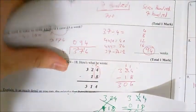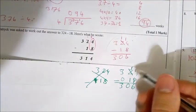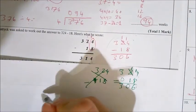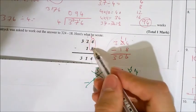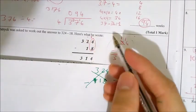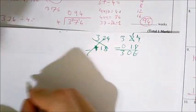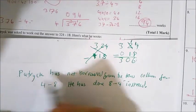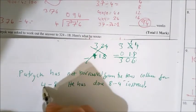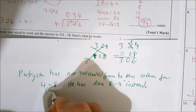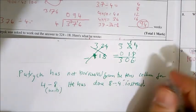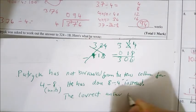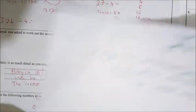So where has his answer differed? Well, his answer's differed because 4 take away 8, if I look here, he's given it 4. But I got 6. What's he done? Patrick has not borrowed from the above column. He's done 4 take away 8 and given 4. So he's flipped these the wrong way around. So then what I do is I write a nice, neat sentence what Patrick has done wrong. Patrick has not borrowed from the tens column for 4 minus 8. He has done 8 take away 4 instead. And you could even put the correct answer is 306.